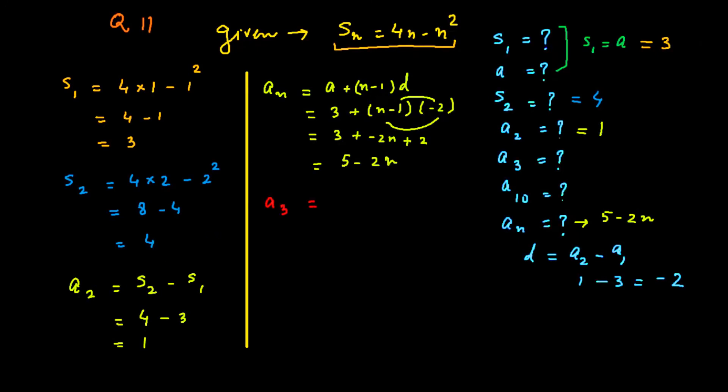To find a3, we put n equals 3, so 5 minus 2(3), that is 5 minus 6, or a3 equals negative 1. Similarly, to find a10, we write 5 minus 2(10), that is 5 minus 20, or a10 equals negative 15.